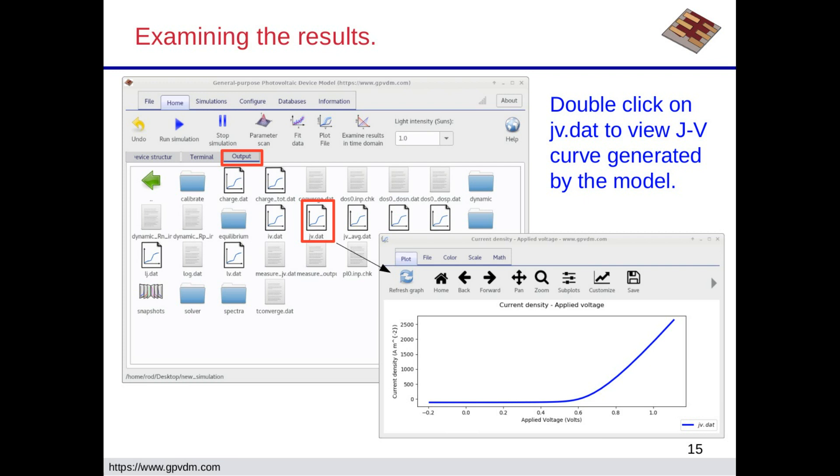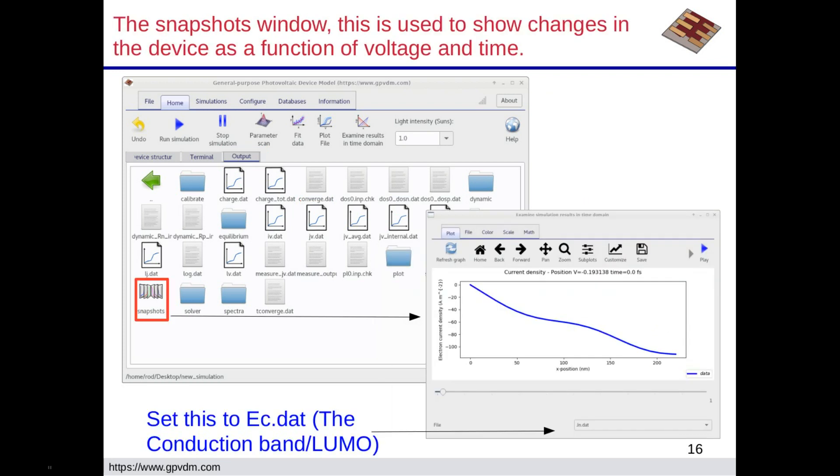Okay, so that's just your standard JV curve for an organic solar cell. That's actually the one from an advanced materials paper I did on a P3HT solar cell. So that's actually quite calibrated curve.